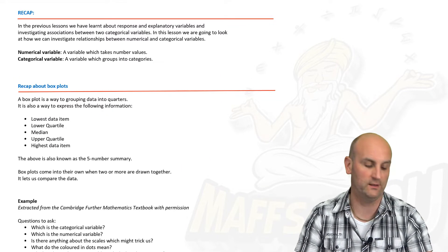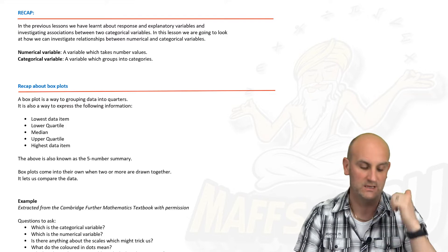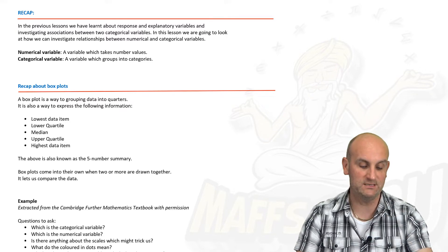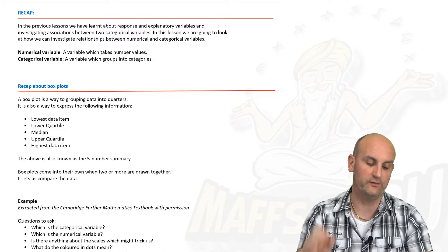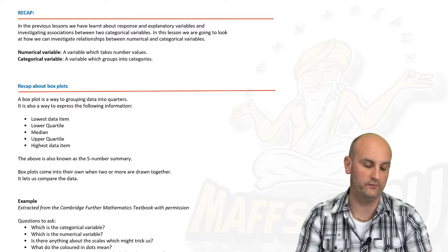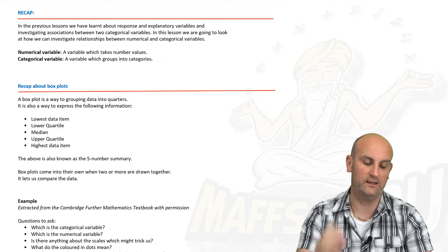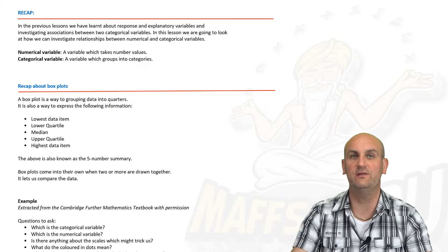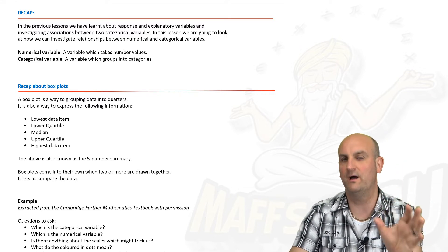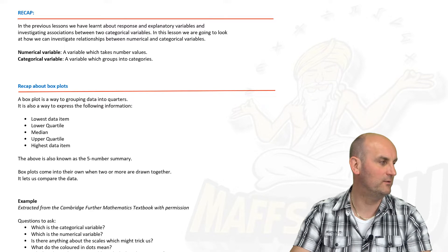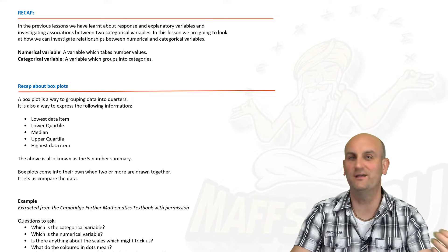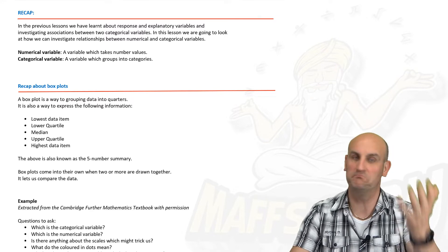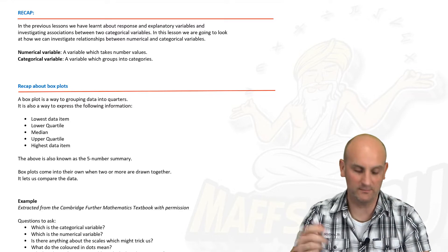We've already looked at the idea of numerical variables and categorical variables. Numerical values can take number values and categorical values group things into categories. So they'll be worded-type things like colors or similar groupings.